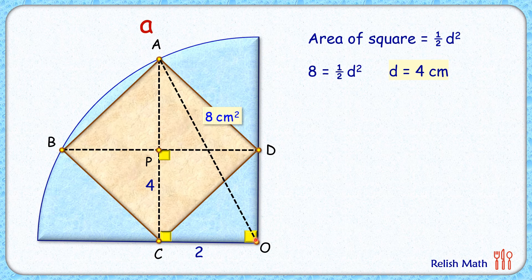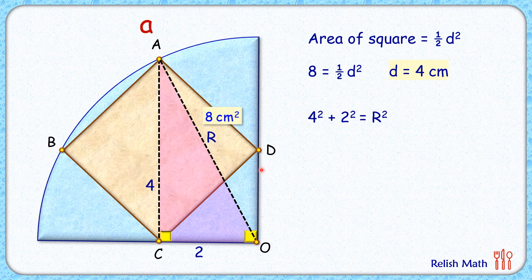Let's consider the triangle ACO. It's a right angle triangle. Applying Pythagorean theorem, we'll get 4 squared plus 2 squared is R squared, or R squared is 20.